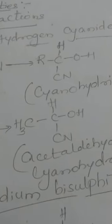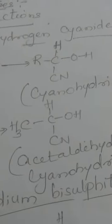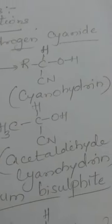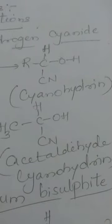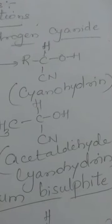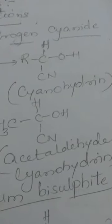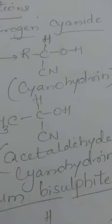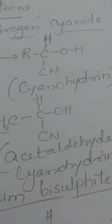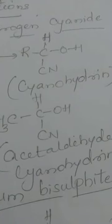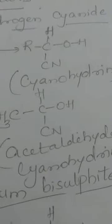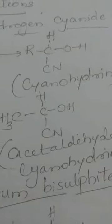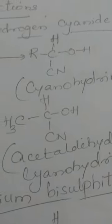In the product you get RCHOHCN. Compounds wherein a hydroxy group OH and a cyano group CN are bonded to the same carbon atom are called cyanohydrins. So aldehydes react with hydrogen cyanide to form cyanohydrins.